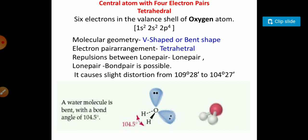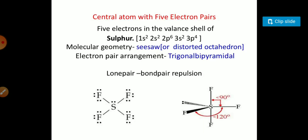Next is central atom with five electron pairs, like SF4. You can see here that structure is square pyramidal, and after the presence of the lone pair you can see the geometry of this molecule is distorted and now the geometry is seesaw or distorted octahedral, and the lone pair-bond pair repulsion is present.